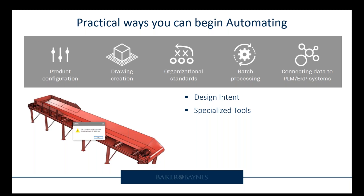You might start with specialized tools included in your software — a component library holding configurable models of parts found in your machinery handbook. Sheet metal design follows standards you define such as thickness, bend allowances, and corner treatments to ensure designs meet manufacturing requirements. Tube and pipe design contains all the hardware you need for routing threaded, welded pipe, bent tubes, and flexible hoses. Frame design only requires you to build a wireframe and select a cross-section, and the software builds the 3D model, simulates it, and produces a cut list.